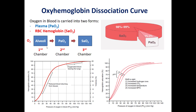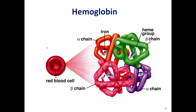If the removal of CO2 is not efficient or sufficient, we will have an increase in acidity. As stated, oxygen is transferred either dissolved in the plasma or attached to the hemoglobin molecules in the RBC.